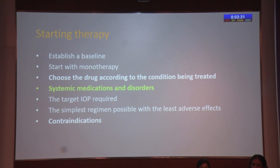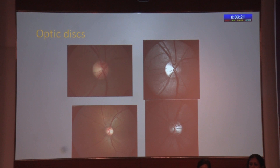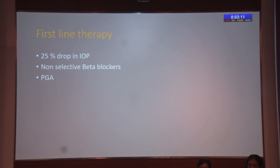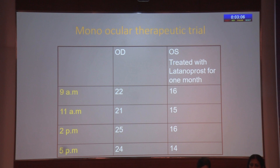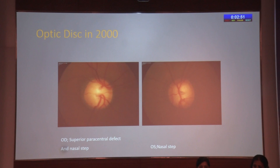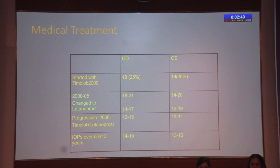When you start therapy: establish a baseline, start with monotherapy, choose the drug according to the condition being treated, remember systemic medications and disorders, the target IOP required, use the simplest regimen with least adverse effects, and remember the contraindications. For a 39-year-old male with IOP around 25-26, open angles, right eye disc fairly normal but left eye showing a nerve fiber layer defect — early glaucoma requiring at least 25% IOP drop — you have a choice of non-selective beta blockers or PG analogs. We did a monocular therapeutic trial for this patient in the left eye, given the nerve fiber layer defect, and found a significant difference between the two eyes.